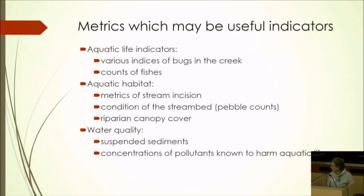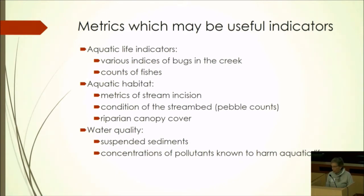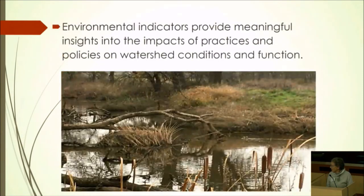Here are some examples of indicators that may be useful. For aquatic life: bug metrics — invertebrates in the creek. For aquatic habitat: metrics of stream incision, pebble count, and stream bed condition — simple measurements. For water quality: suspended sediments. In conclusion, environmental indicators provide meaningful measurement of the impact of practices and policies on watershed conditions and functions.